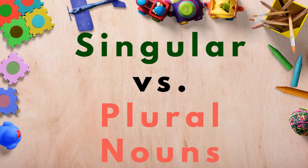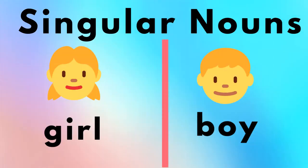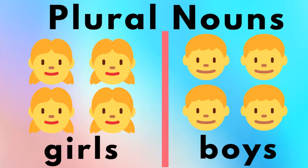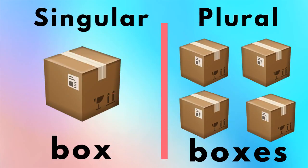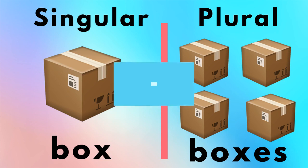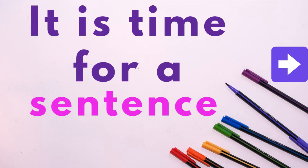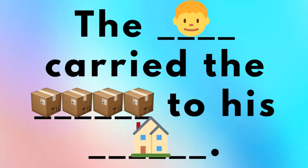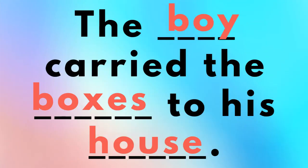What is the difference between singular versus plural nouns? Singular means one — a single girl or boy. And plural noun means more — more girls and more boys. With plural, you either add an S or ES. Singular: box. Plural: boxes. The boy carried the boxes to his house. Boy and house are singular; boxes is plural.